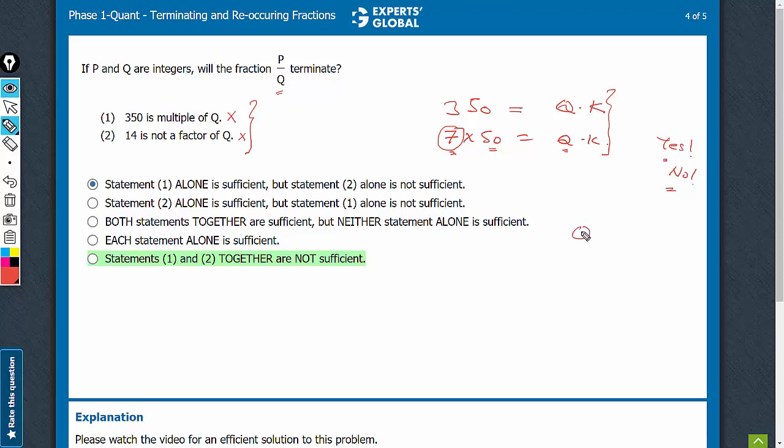Imagine if Q is equal to something like 7 times 5, which is 35, or 175, or 7 itself. For these values, see, 14 is not a factor of these values but these values will not lead to a terminating value of P by Q.